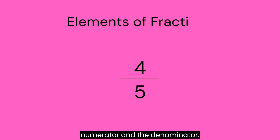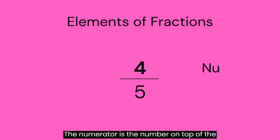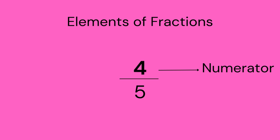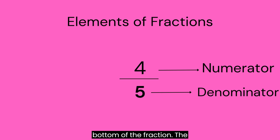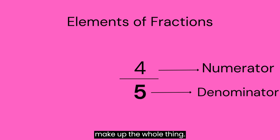A fraction has two key parts: the numerator and the denominator. The numerator is the number on top of the fraction — this number tells us how many parts we are talking about. The denominator is the number at the bottom of the fraction, and it shows us how many equal parts make up the whole thing.